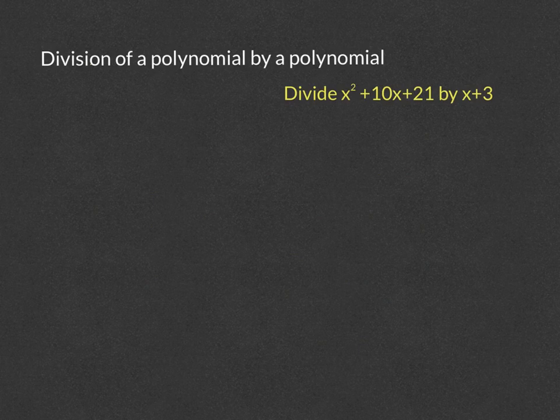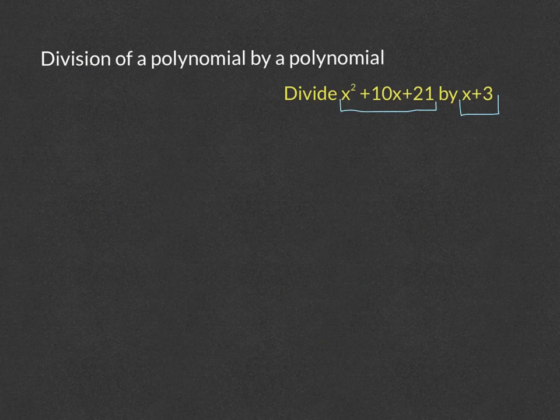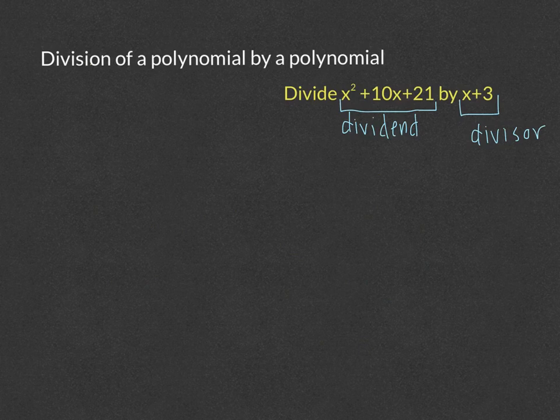Before going over the steps, I want to talk about a couple of things. When we have a division problem, you have specific pieces. The x squared plus 10x plus 21 is called the dividend — the dividend is what you are dividing into. The x plus 3 is called the divisor — the divisor is what is being divided. The answer of division is called the quotient. Let's go through the steps to find the quotient.